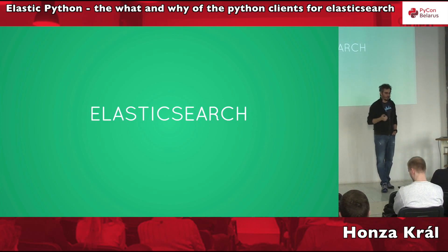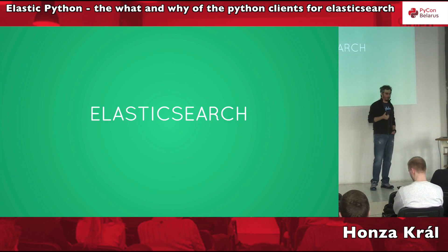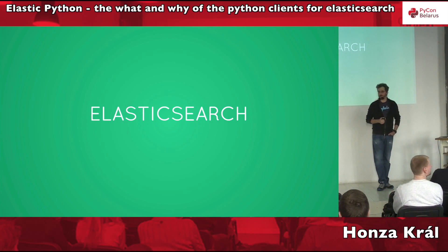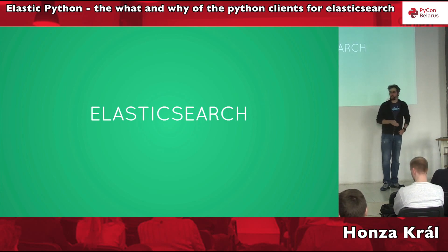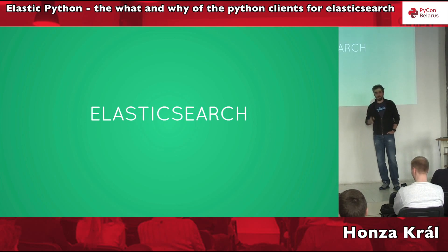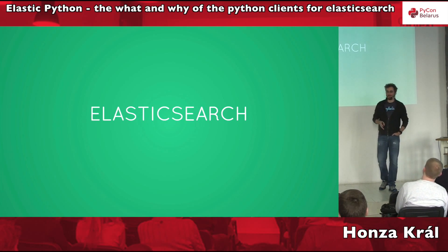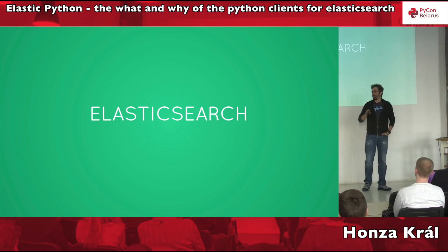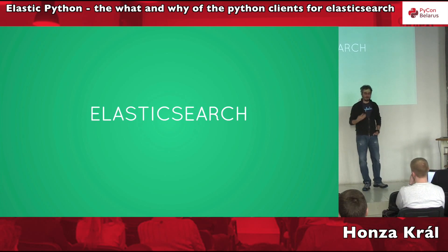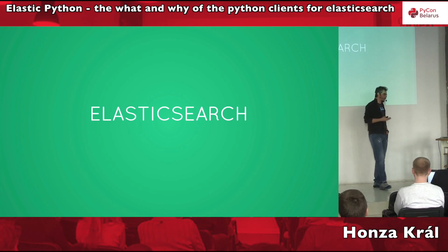Elasticsearch — the official title is 'open source distributed search and analytics engine.' We can break that apart. It is open source. It is written in Java unfortunately, but we do our very best to hide that fact from you. There is not a single line of XML anywhere in sight, and it's very easy to get running.